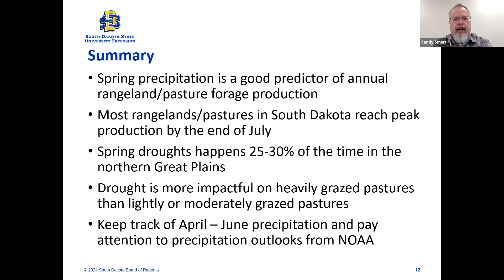So putting it all together: spring precipitation is a good predictor of annual rangeland and pasture forage production. Most rangeland pastures in South Dakota reach peak production by the end of July. Spring droughts happen 25 to 30 percent of the time in the Northern Great Plains, and drought is more impactful on heavily grazed pastures than lightly or moderately stocked ones. It's really important to keep track of April through June precipitation and pay attention to the precipitation outlooks from the National Weather Service. Thank you.